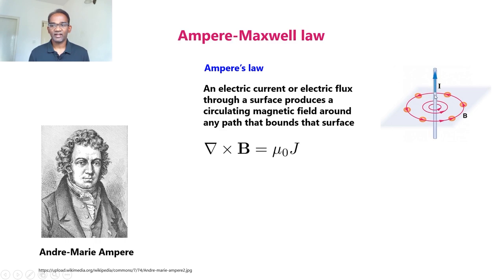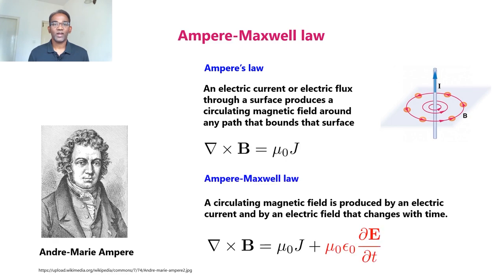An electric current or electric flux through a surface produces a circulating magnetic field around any path that bounds that surface. Let us consider a current carrying conductor with current density j, expressed in ampere per meter square. This current density creates a circulating magnetic field, denoted by del cross B equal to mu zero times j. Ampere suggested this equation for DC fields. It was Maxwell who modified this equation to take into account varying electric fields, adding another term mu zero epsilon zero times ∂E/∂t. This equation is known as the Ampere-Maxwell law.